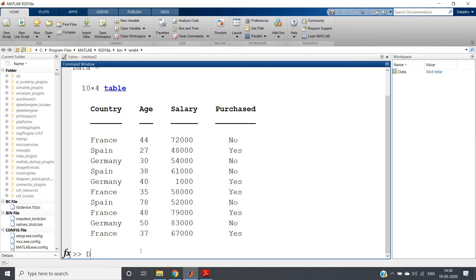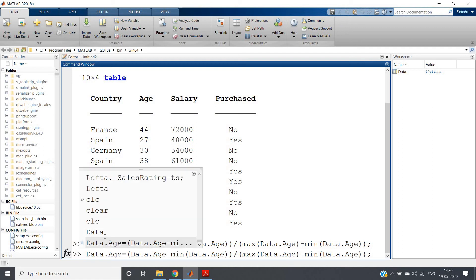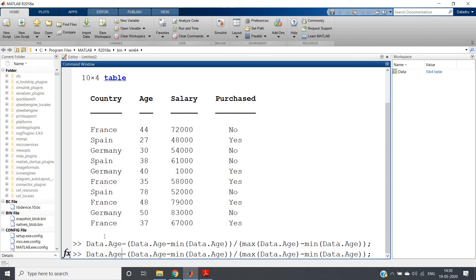If you write 'data' we will be getting our dataset. Now what we can do, we can write like this: data.age = (data.age minus min(data.age)) divided by (max(data.age) minus min(data.age)). I hope our algorithm should work, just let us run. Yeah!